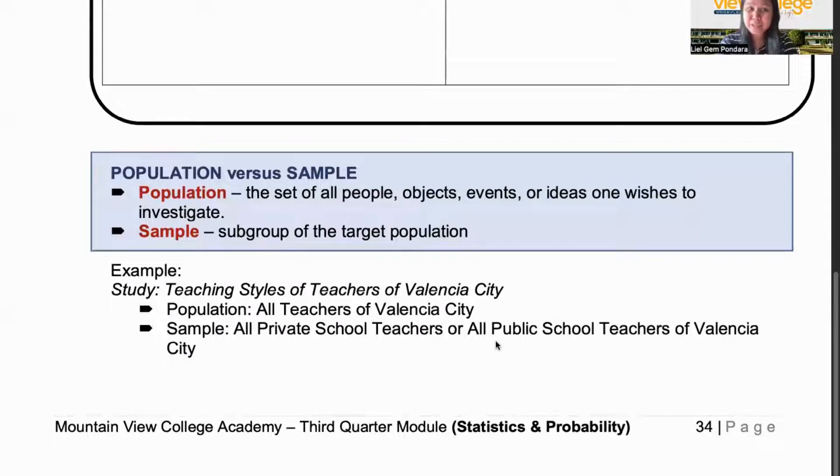Let us first have these keywords. Population versus sample. Now, what is a population? If you say population, this is the set of all people, objects, events, or ideas one wishes to investigate. While a sample is just a subgroup, or we say a representation of the population. So imagine it this way. This is the population and a part is only a subgroup of the population. For example, your study will be on the teaching styles of all teachers of Valencia City. Your population, you say, what is the totality? What's the all? The population will be all the teachers of Valencia City. And what could be a good representative? A sample can just be all private school teachers or all public school teachers of Valencia City.